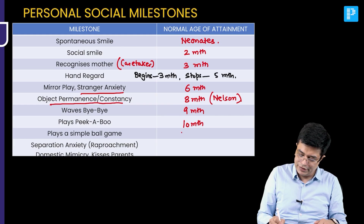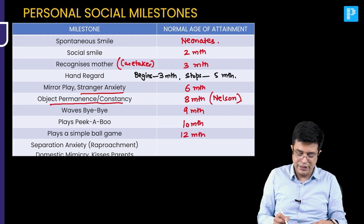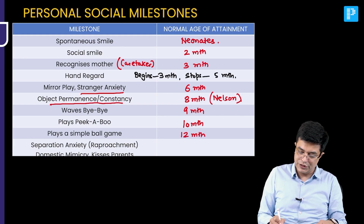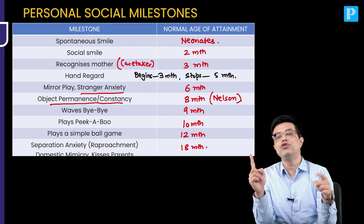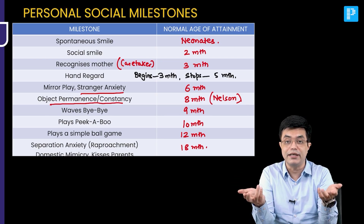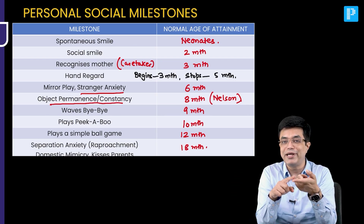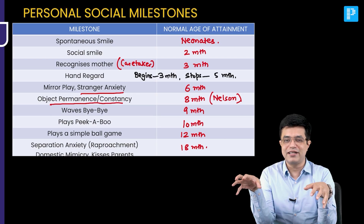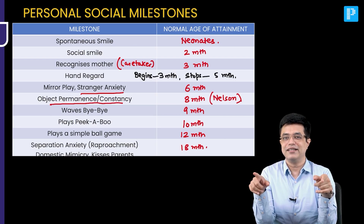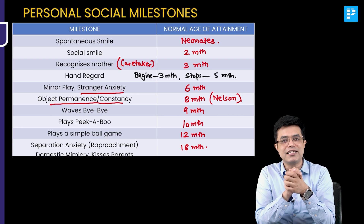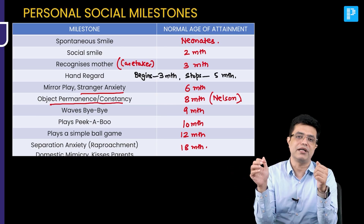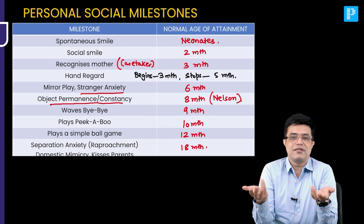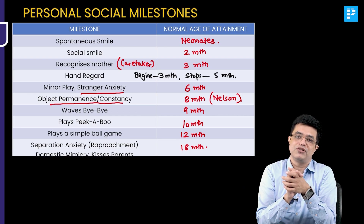Playing a simple ball game starts from 12 months of age. Separation anxiety, or rapprochement, comes at 18 months of age — the child cries when parents are not around or when in an unfamiliar environment alone. Domestic mimicry also comes at 18 months — the child mimics common actions happening at home. The ability to kiss parents to express happiness also starts from 18 months of age.